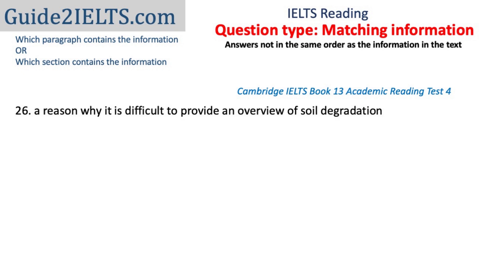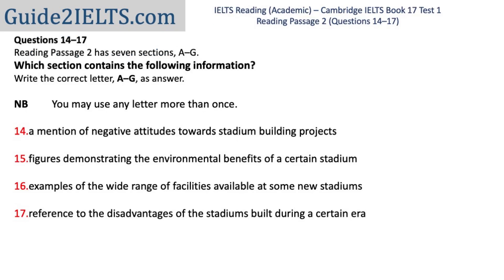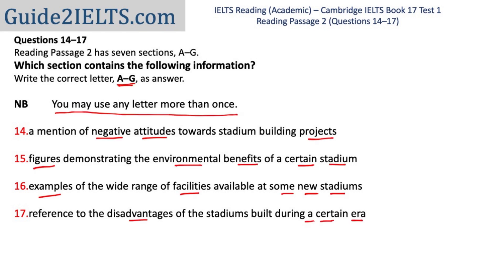An important part of these questions is the first two or three words, which tell you exactly what you're looking for. For example, one question says 'figures illustrating the rapid expansion of the palm oil industry' — the word 'figures' means numbers, so look for paragraphs with numbers mentioned. Another says 'mention of the impact of budget airlines on airport income' — just any mention. Another says 'a reason why it is difficult to provide an overview of soil degradation' — now you're looking for a reason why something is difficult, not just a mention. Another asks for 'a reference to one person's motivation' — you're likely to find a person's name. So read the question carefully, including those first two or three words.